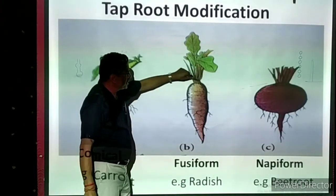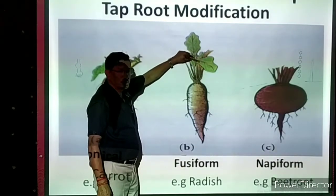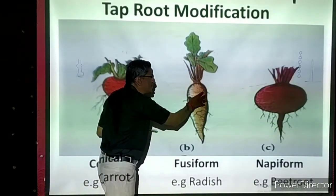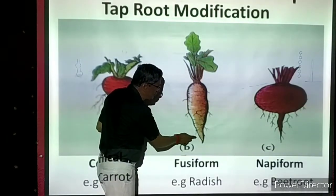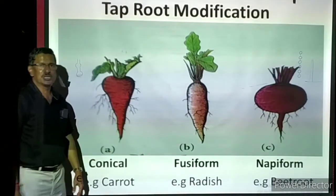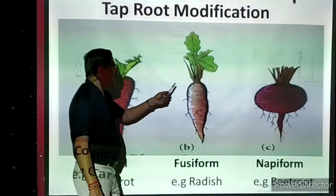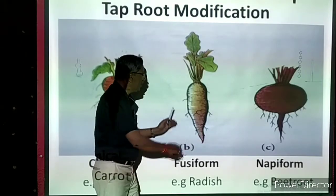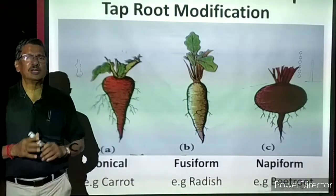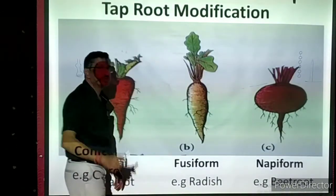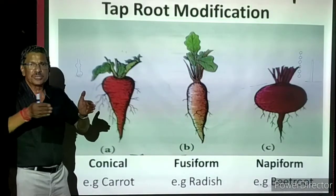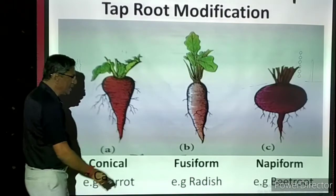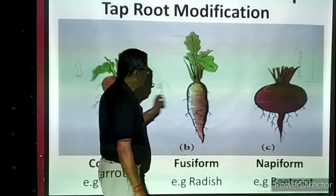The second is fusiform modification. The leaves prepare enormous food, which goes to the primary root, making it stouter. The shape here is fusiform: upper end slightly narrower, lower end also narrower or pointed, and the middle portion is broader or stout — also called spindle shape. Both ends are pointed and the middle is wider. Example is radish, which also stores a lot of food and is a vegetable.